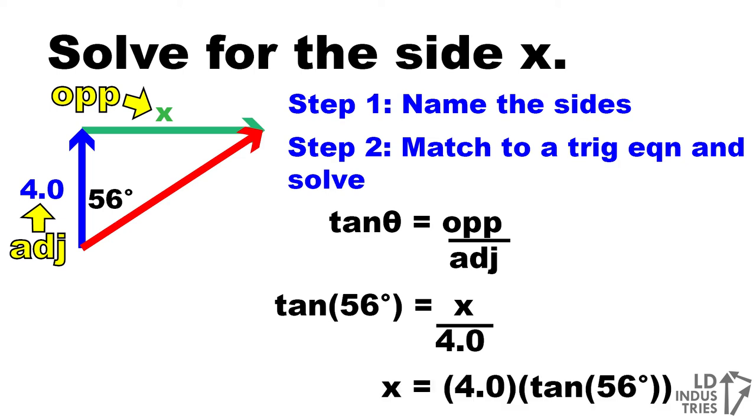To solve that equation, I multiply both sides by 4 and I get that x will be 4 multiplied by the tan of 56 degrees, which will work out to 5.9.